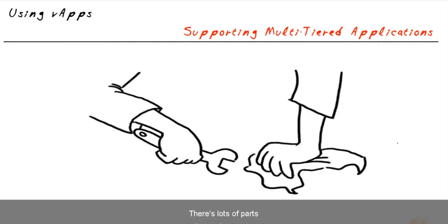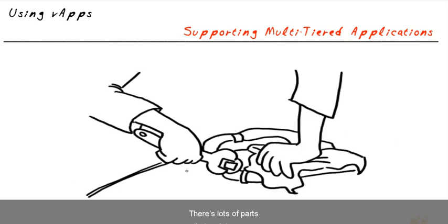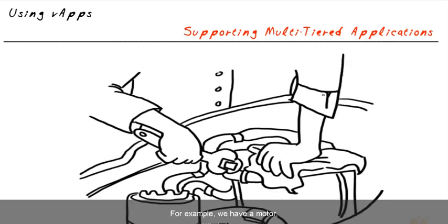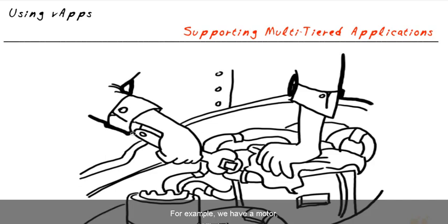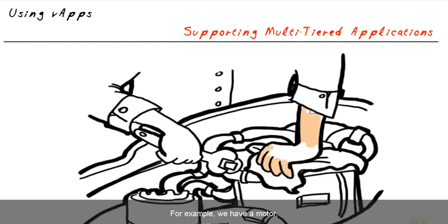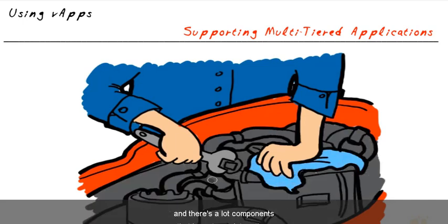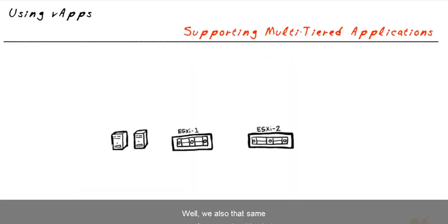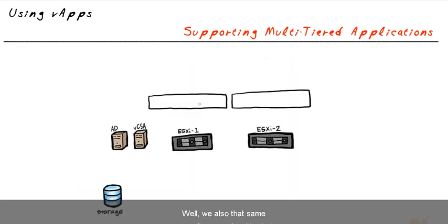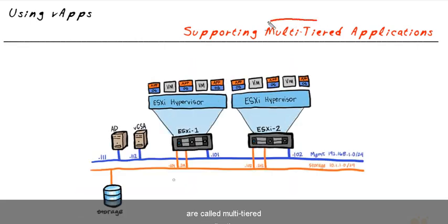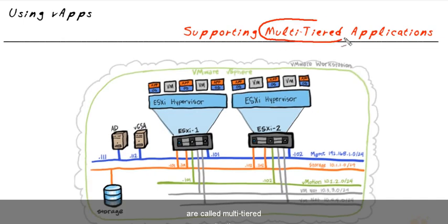Imagine how a car operates. There are lots of parts that go into a car. For example, we have a motor, a transmission, an electrical system, and a lot of components that have to work together. If any one of those is not present, it's really not going to be a functioning car. We also have that same type of scenario with what are called multi-tiered applications.